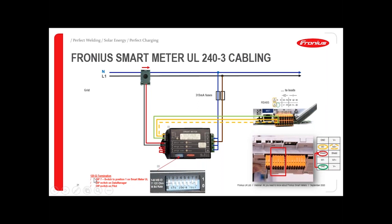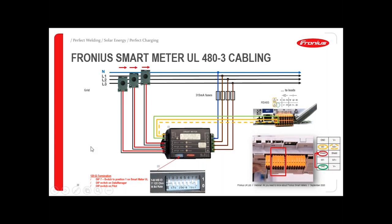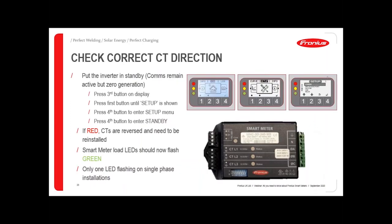We have very similar connections for the data here — D plus, D minus, and ground going across to the data manager and to the Gen24. The termination resistor on the Smart Meter UL is set by putting DIP switch number seven into the upright position, so just make sure that this is always in the upright position. For the three-phase installation, we have a very similar setup, but now we have the second and third CTs. We have phase two and phase three connected. Make sure that the termination resistor is in the upright position and that you've connected at the data manager or the Gen24.